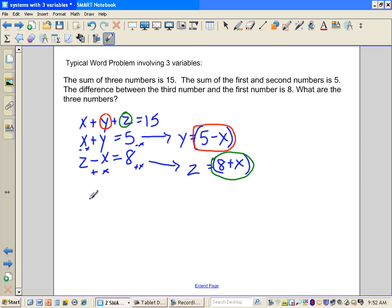So we end up having x plus what y is, 5 subtract x, plus what z is, 8 plus x is equal to 15. Since I have all x's here, I can combine like terms and solve for x. Well, x minus x, those actually cancel out. So I'm just left with 1x here. 5 and 8 is 13, equal to 15, subtract 13, x is equal to 2.